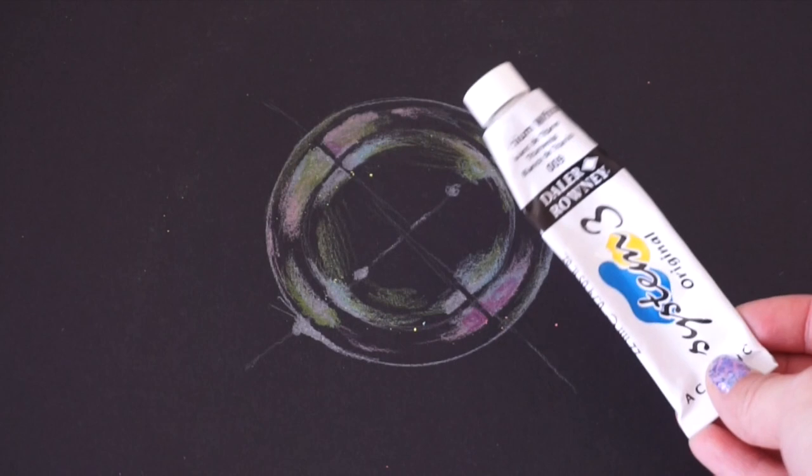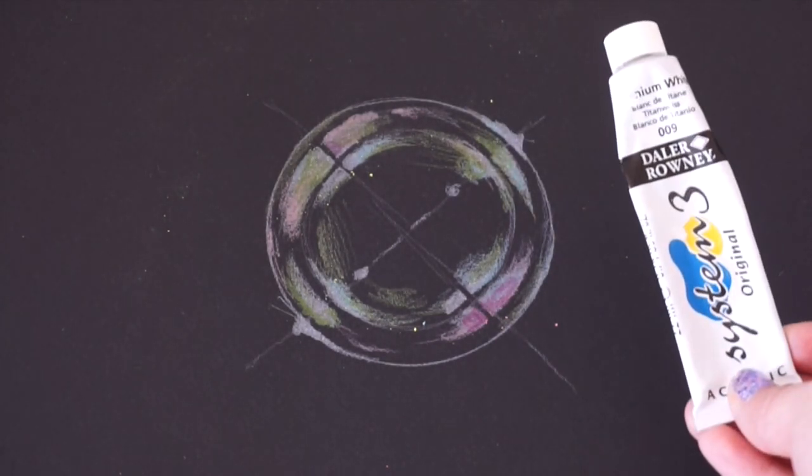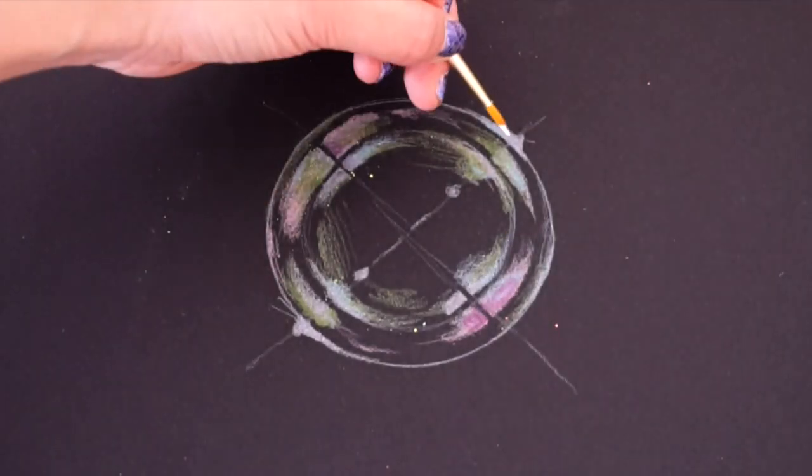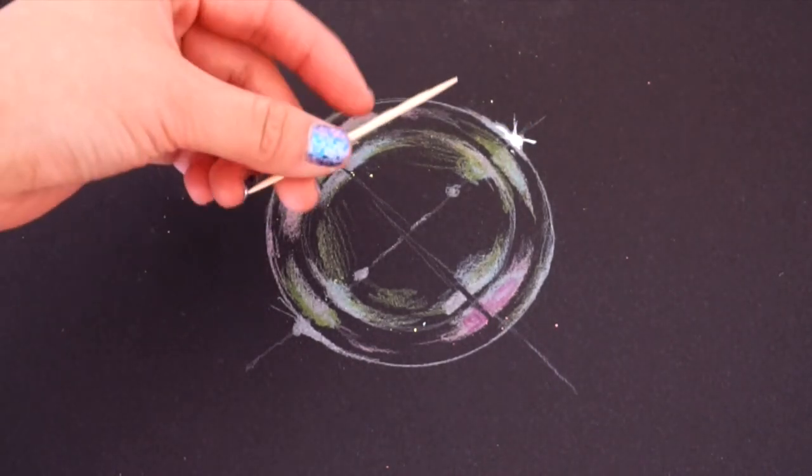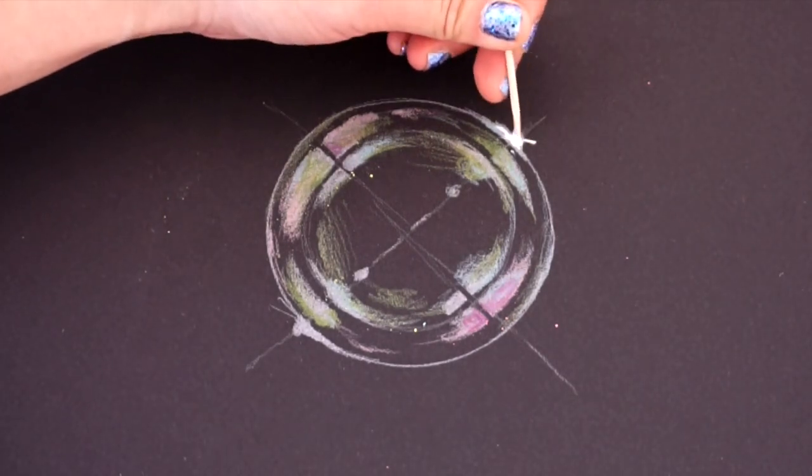Now take some white acrylic paint, nail polish or tipex, and use a brush or toothpick to create some really sharp highlights on the reflections that you drew earlier. This step really makes the transparency of the bubble pop out.